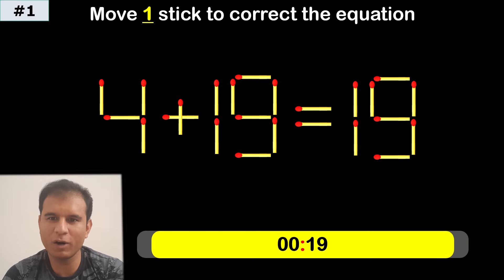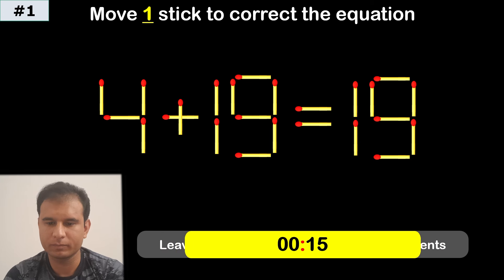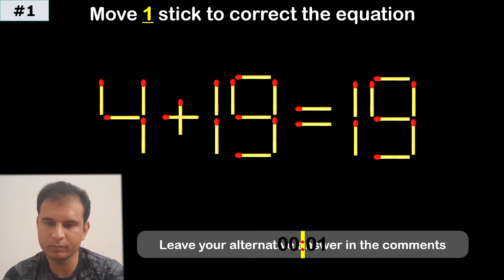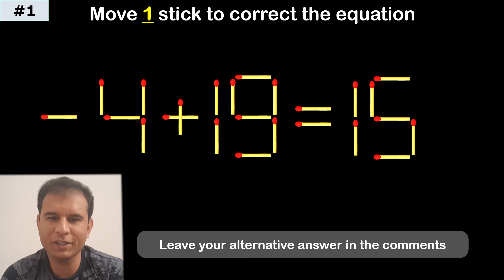Puzzle number 1. Move one stick to correct the equation. The answer is negative 4 plus 19 equals 15.